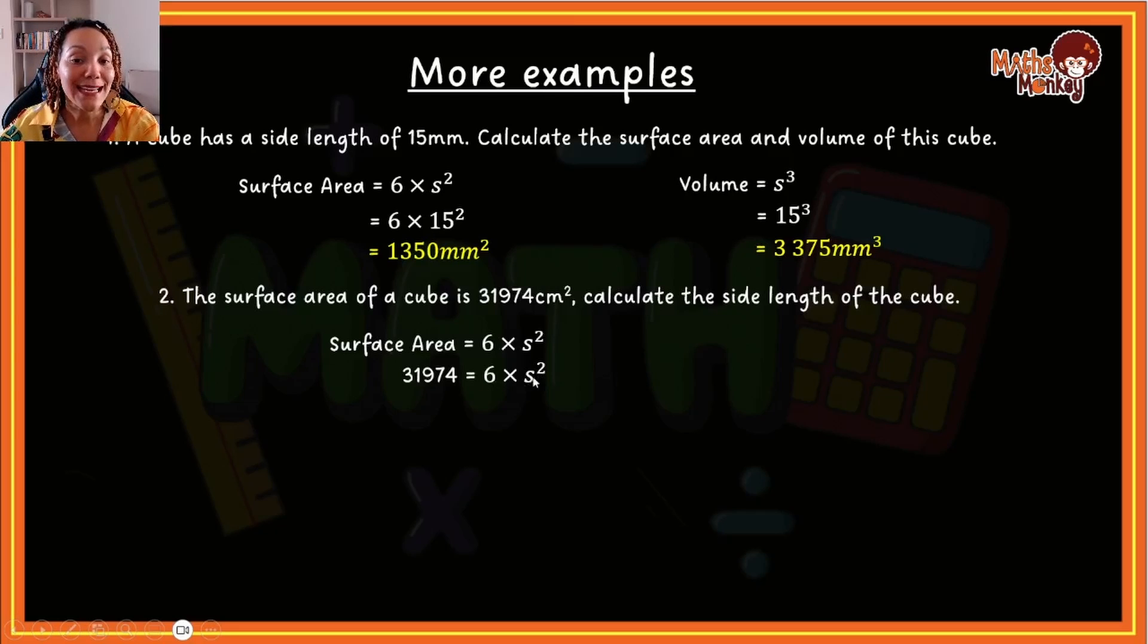Now I want to get the s alone. So I'm going to divide both sides by 6 and this will give me 31,974 divided by 6 gives me s to the power of 2. But now remember, we are looking for s and not s to the power of 2. So we need to square root that so we can actually find s. This is actually applying our equation properties. So if you have trouble understanding this, please go to that video of mine on equations and it will help you understand what is actually happening when working back.